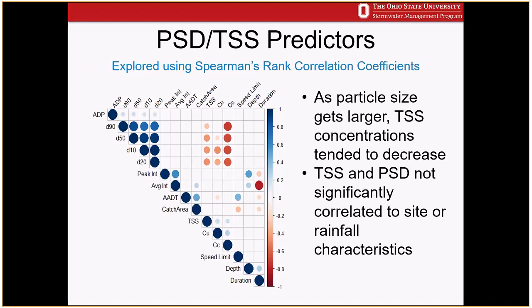Spearman's rank correlation analysis showed that particle sizes from D10 to D90 were negatively correlated with TSS — as particle size gets larger, TSS concentrations tended to decrease. Notably, TSS and PSD were not well correlated to rainfall characteristics or site parameters — depth, duration, and intensity of rainfall were not well correlated to particle size parameters.